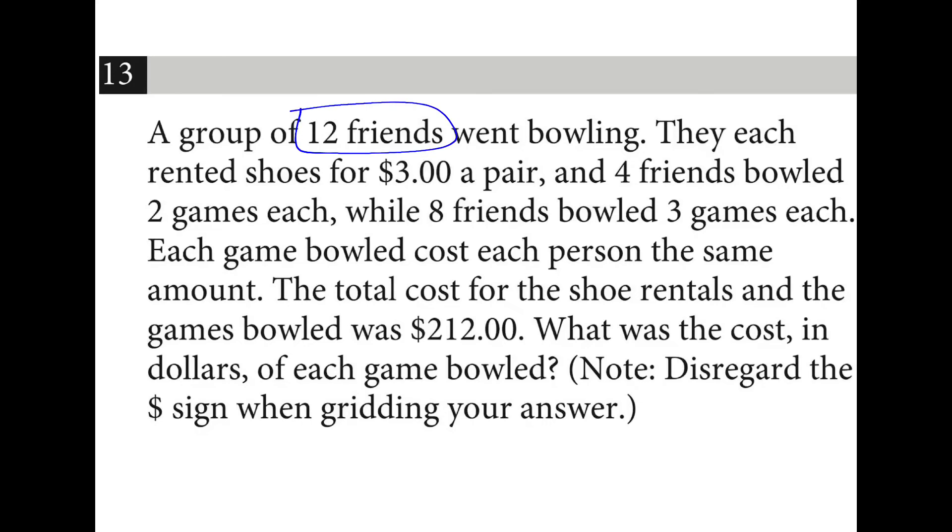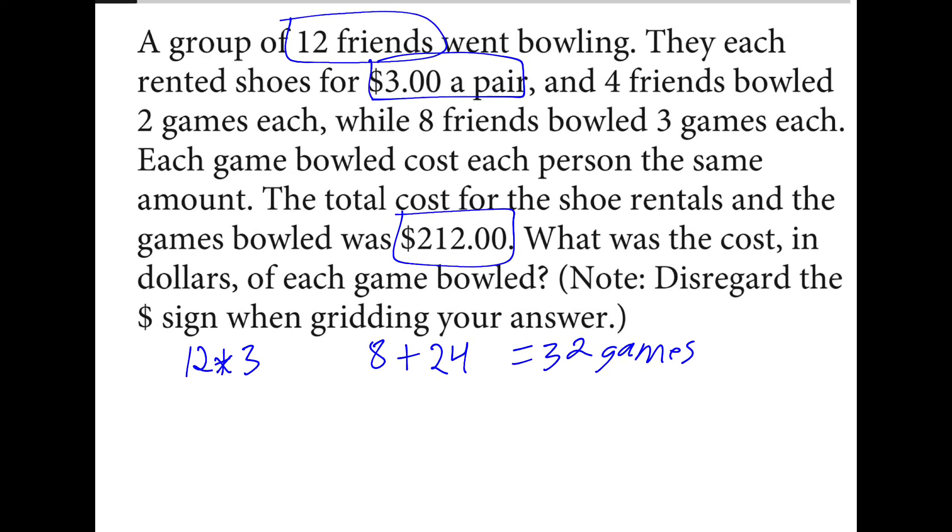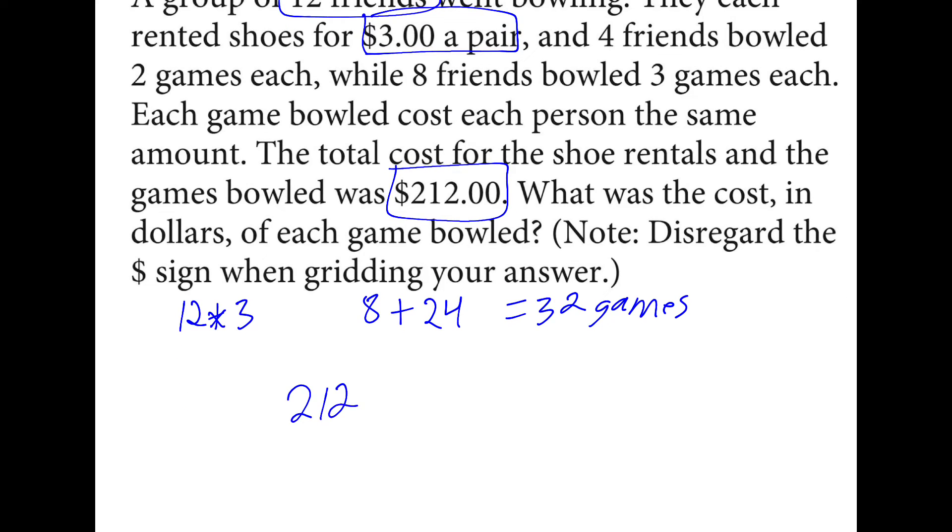12 friends rented, so 12 times three dollars in shoes, and how many total games did they play? Four bowled two, so that's eight. Eight bowled three, that's 24. 32 games altogether. This is the cost. So if I take 212, which is the total cost, and I subtract 36, which was the cost for shoes, I have 176 dollars split across 32 games. And the answer is $5.50 each, or 5.5.